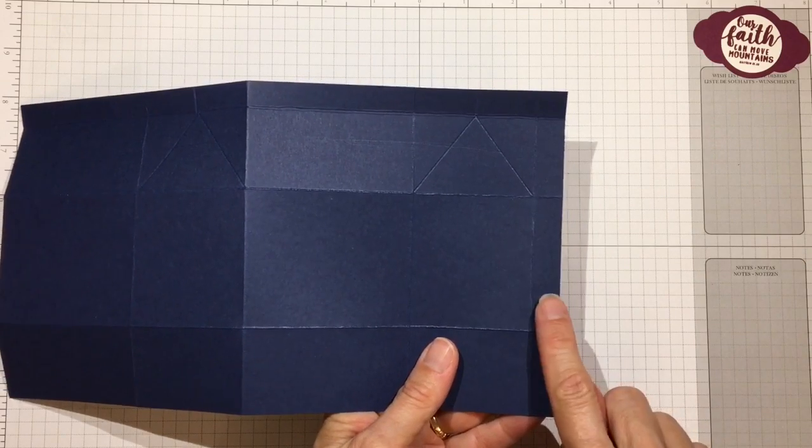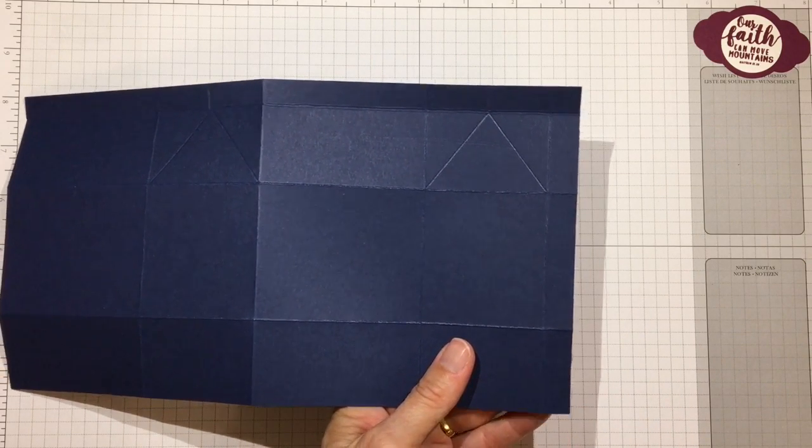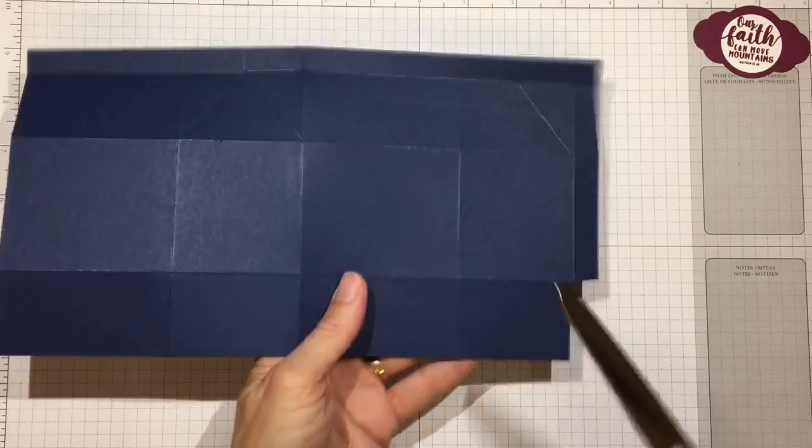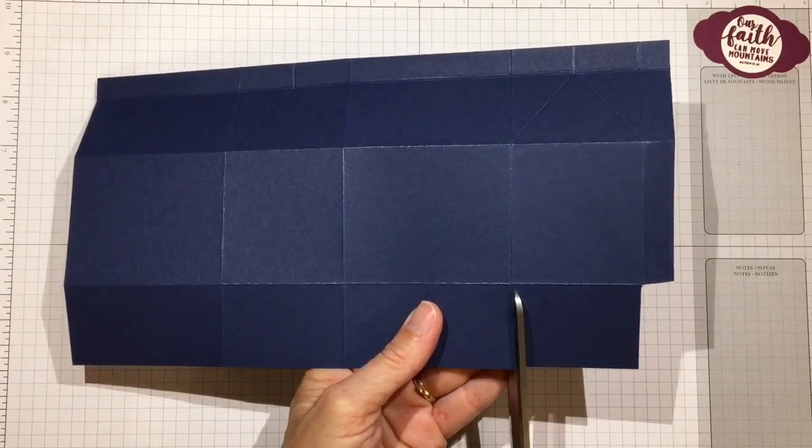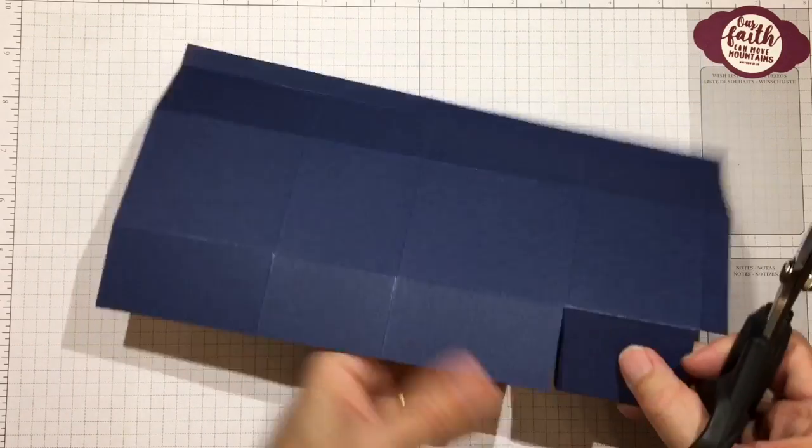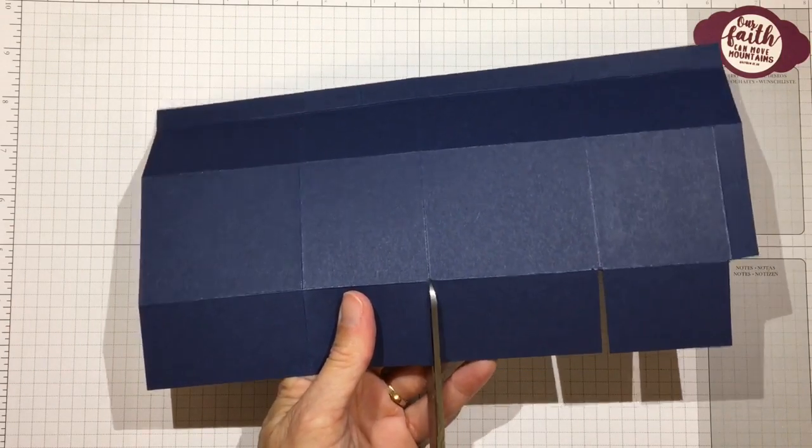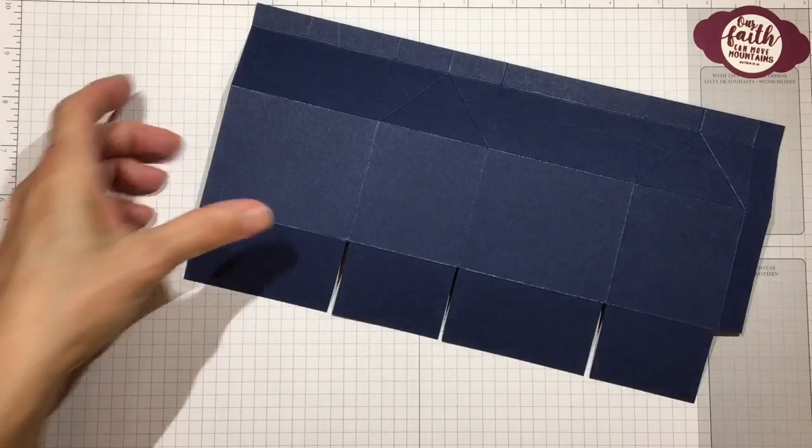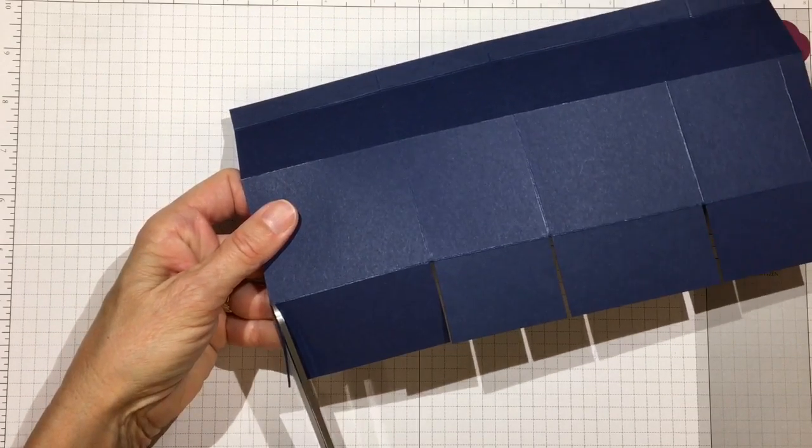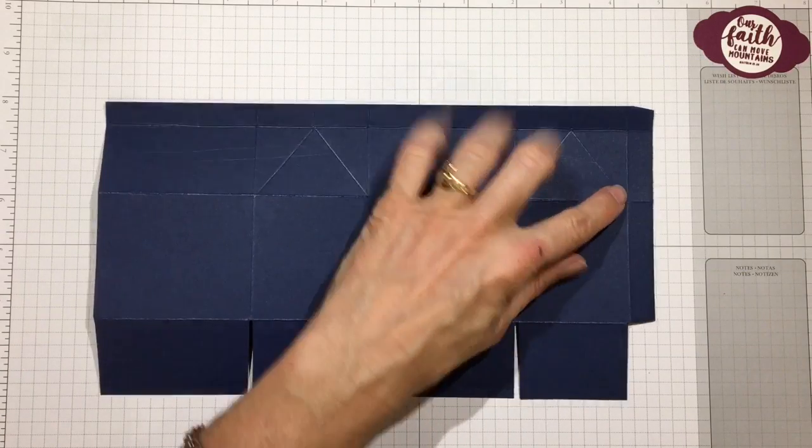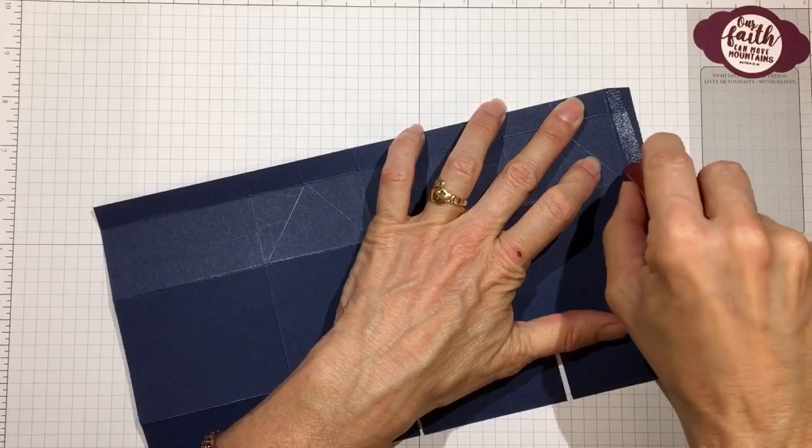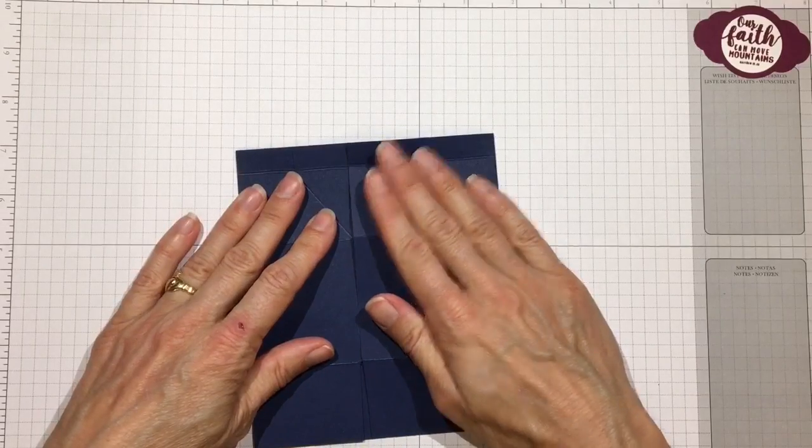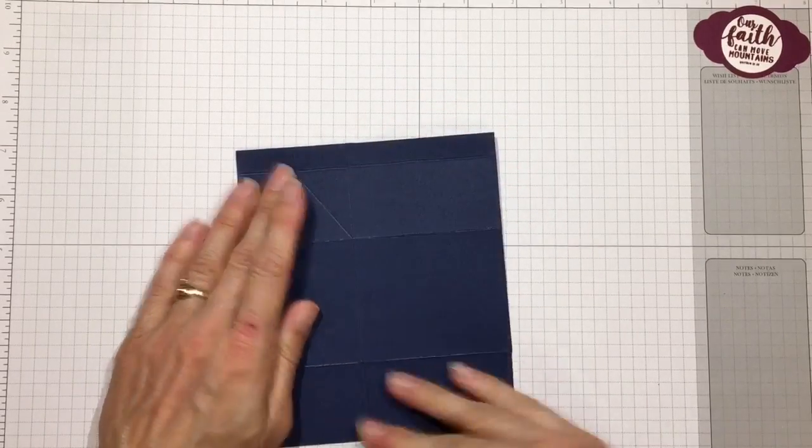We have that half inch section which will be the glue tab. We do not need that bottom rectangle, so let's go ahead and cut that off. Then we're going to cut up on both sides of the remaining score lines on the bottom and just snip it off. I'm just going to take a slight little part off of this side over here just to match. Let's go ahead and put a strong adhesive on the tab. I'm using some Tombow Xtreme. Fold it over and let's match the other side up with it, and they should match up pretty well.